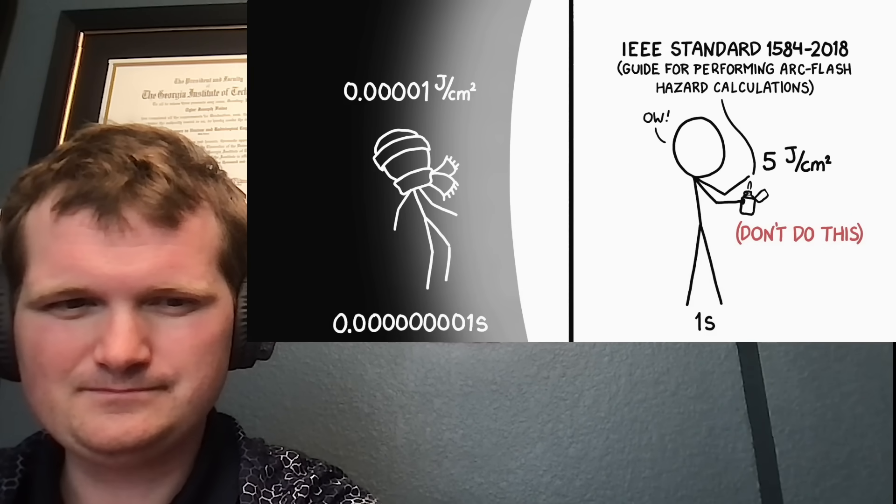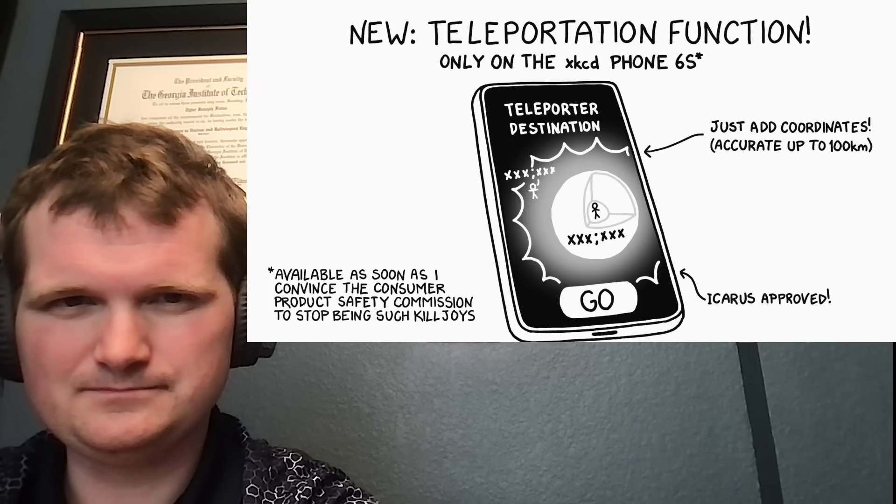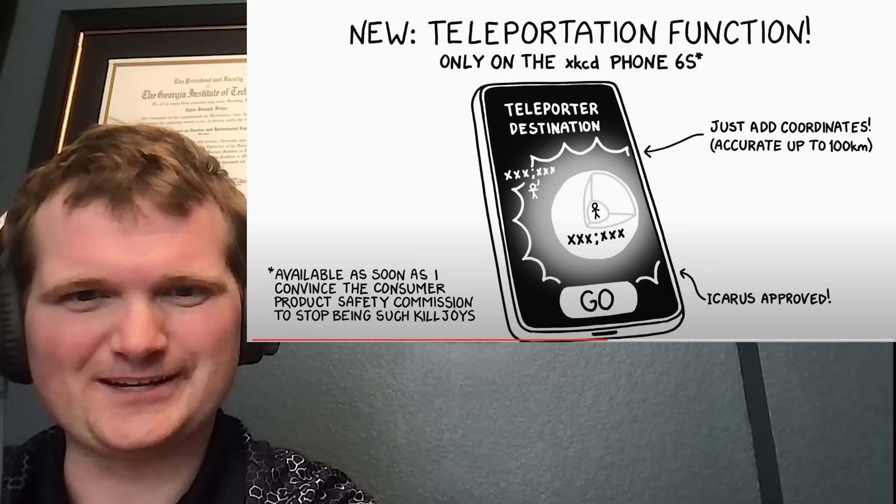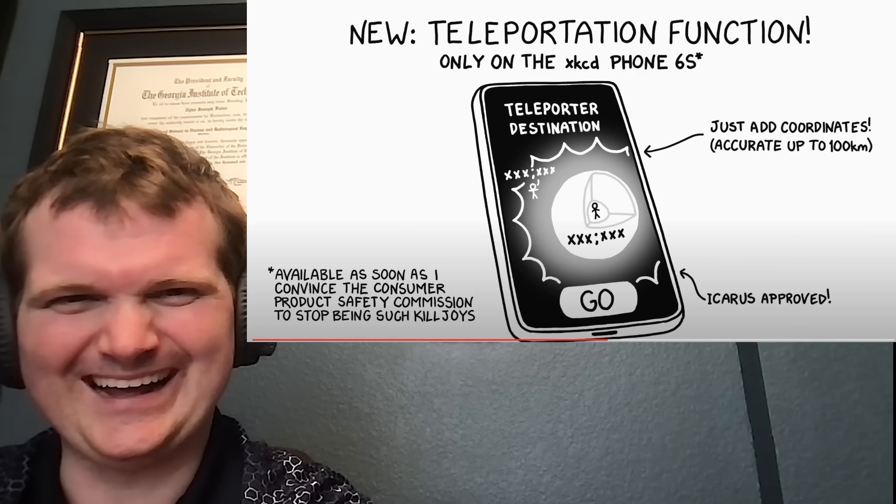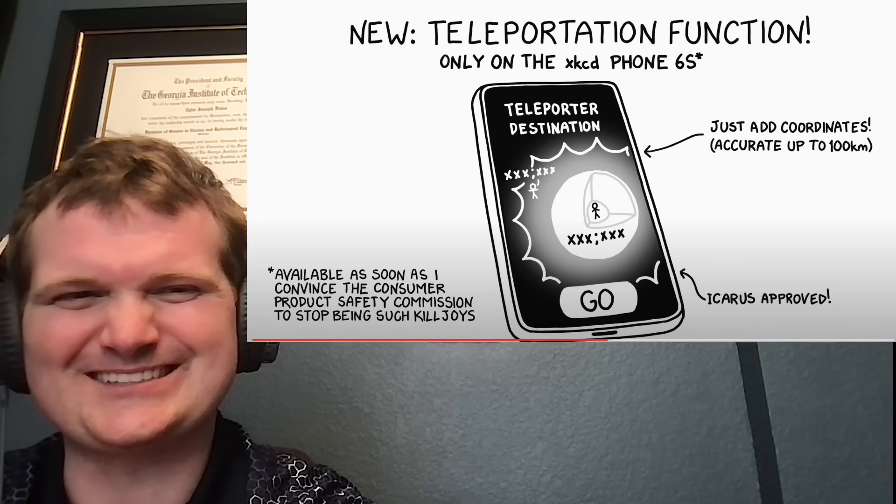But what if you got the coordinates wrong? Oh, you got the coordinates wrong. Kick it up to 100 kilometers. Icarus approved. Oh, it's going to send you to the core.